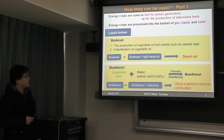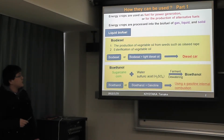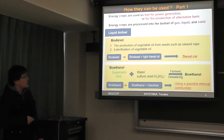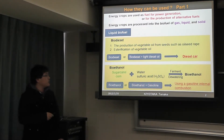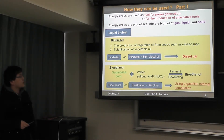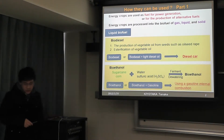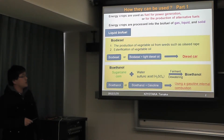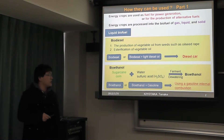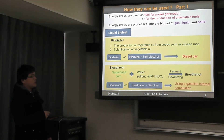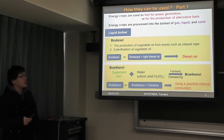Next is bio-ethanol. To produce bio-ethanol, we add water and sulfuric acid to sugar and corn. Then we let them ferment, and re-distill the ethanol solution. Bio-ethanol, or a mixture of bio-ethanol and gasoline, can be used in internal combustion engines that use gasoline.